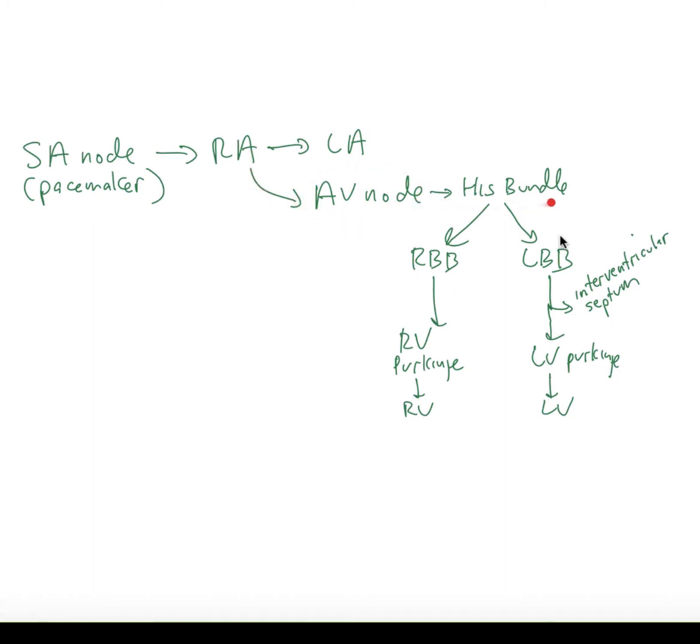From there, we go to the His bundle, splitting into the left and right bundle branches, and then onwards to the right ventricle and left ventricle Purkinje fibers, ultimately depolarizing the right and left ventricles respectively.